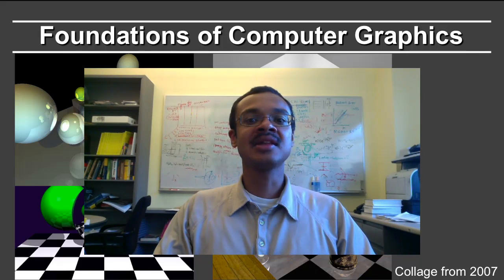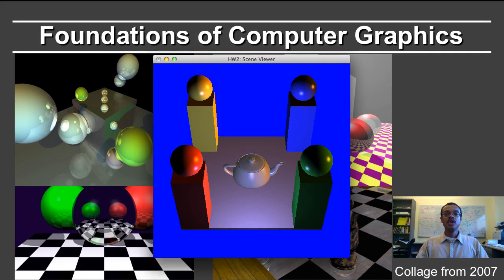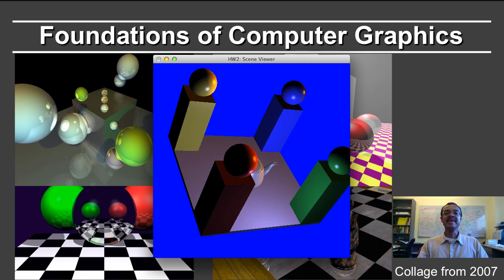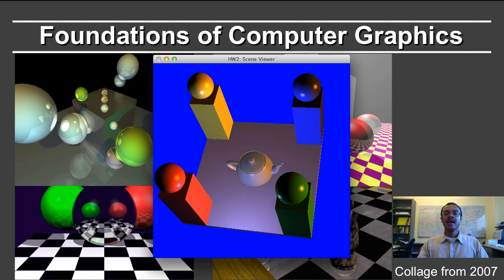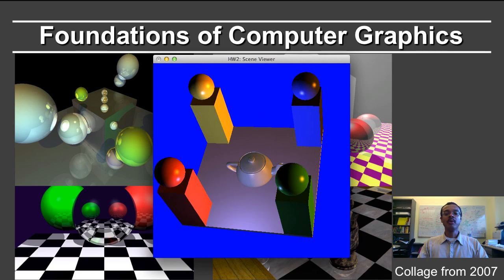The course uses exactly the same assignments as UC Berkeley's CS 184. You will develop a real-time 3D scene viewer in homework 2 that renders scenes with lights and materials, allowing you to look at them from any direction. You can also move about the scene.